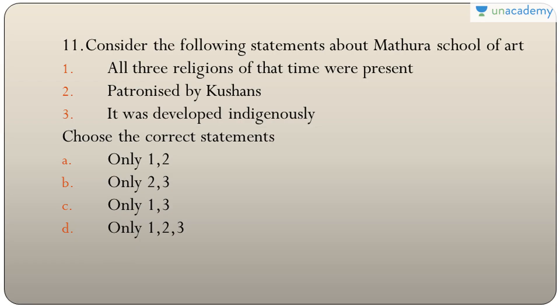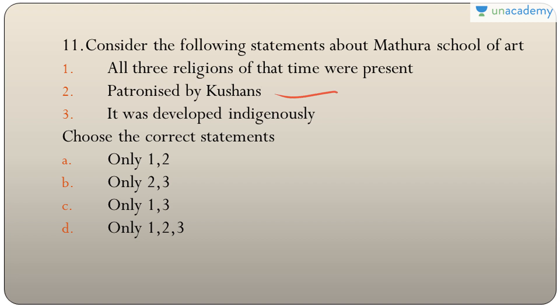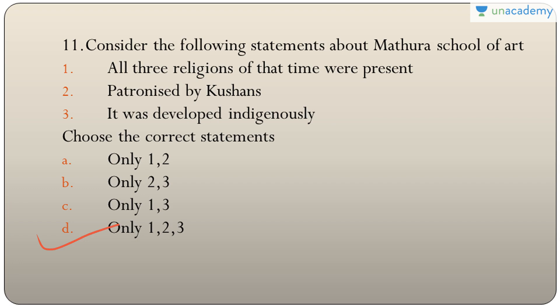Question eleven: statements about the Madhura school of art — all three religions (Buddhism, Jainism, Hinduism) were present, it was patronized by Kushans, and it was developed indigenously. All three are correct, so the answer is D — only one, two, and three. It developed in and around Mathura, and Kankali Tila is famous for Jain sculptures.